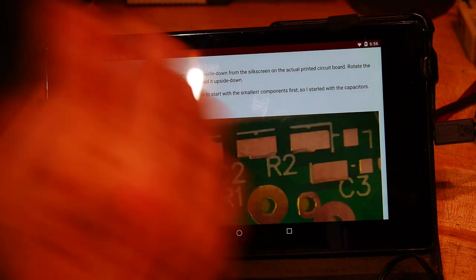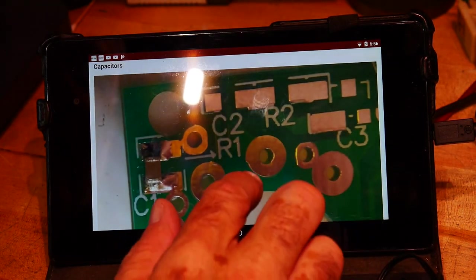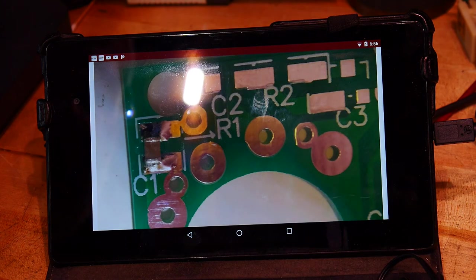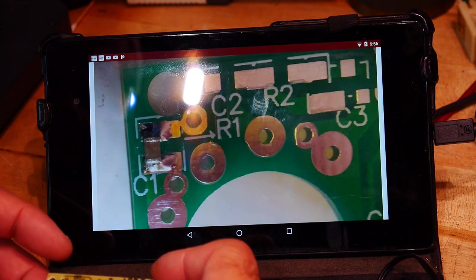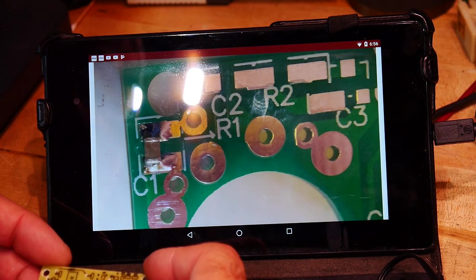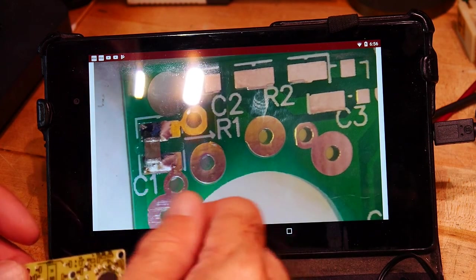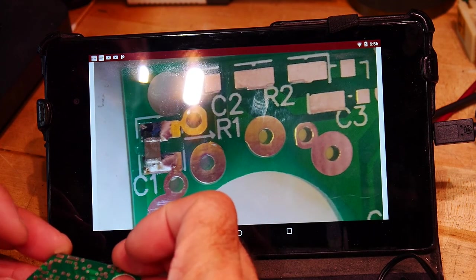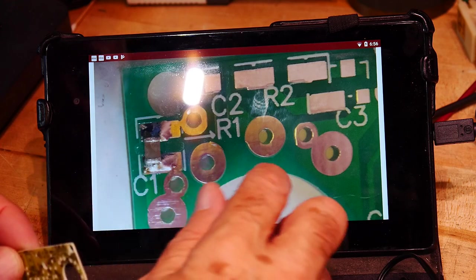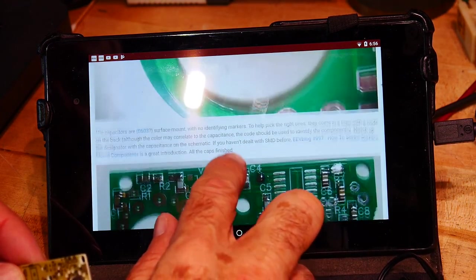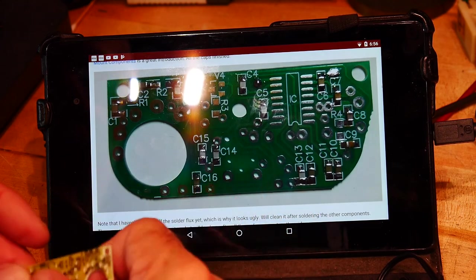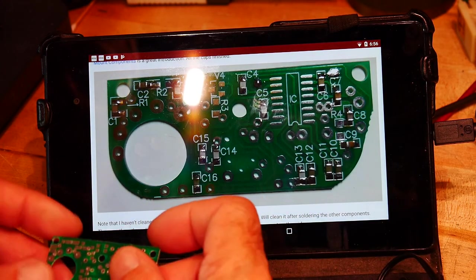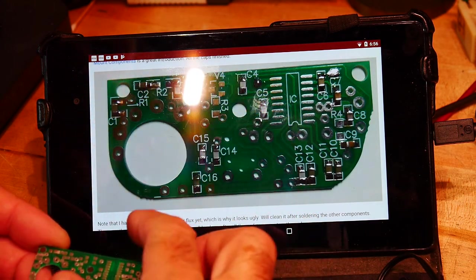And, wow. Yeah, this board's much, much nicer than the one I've got. So I guess the first step is put these components on. These are all the surface mount components.